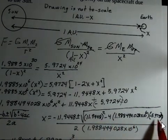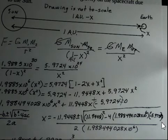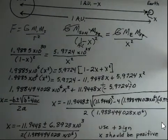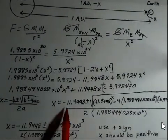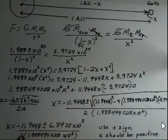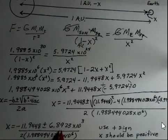So, evaluate in here. Then, take a square root. And what you'll find is we've got this minus b value. Minus 11.9448. Plus or minus. After I take the square root, I get 6.8923 times 10 to the third.